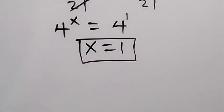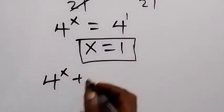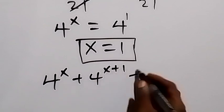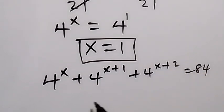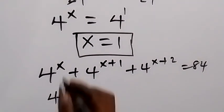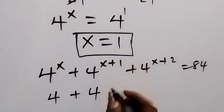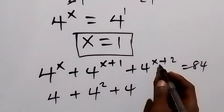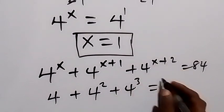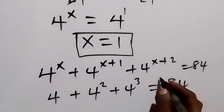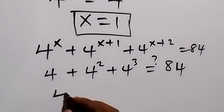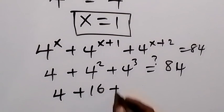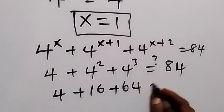We can check by substituting x equals 1 back into the original problem: 4 raised to power 1, plus 4 raised to power 1 plus 1 (which is 4 raised to power 2), plus 4 raised to power 1 plus 2 (which is 4 raised to power 3). That gives us 4 plus 16 plus 64. Does this equal 84?